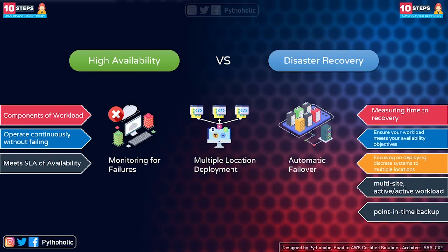With disaster recovery, you need to ensure the workload and resources you've provisioned meet your availability objectives. The focus is on deploying discrete systems to multiple locations, with the main objective being a multi-site active-active workload distribution — a DR strategy to run workloads in two or more distinct data centers or regions. This keeps your workload available despite natural disasters, technical failures, or human action. Point-in-time backup also enables you and your customers to recover data from a specified time within the retention period.